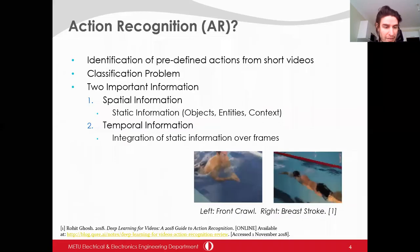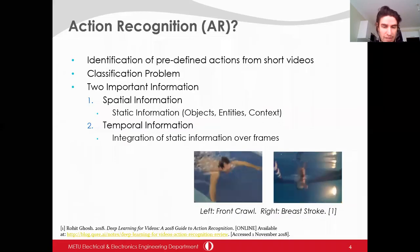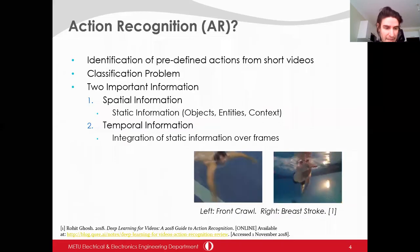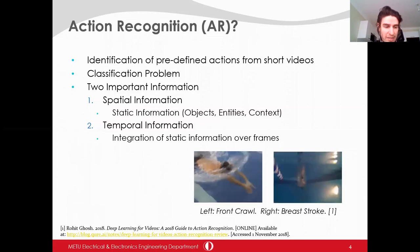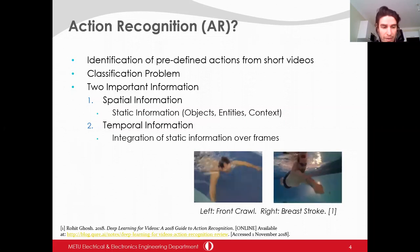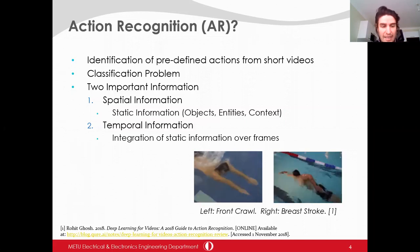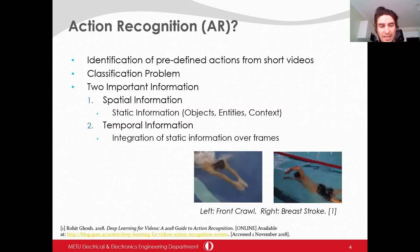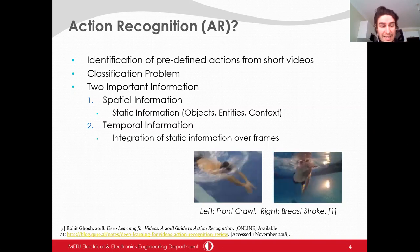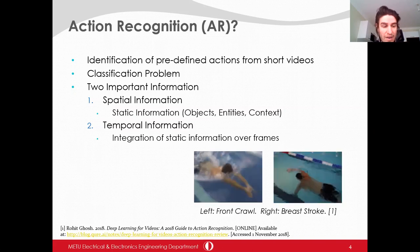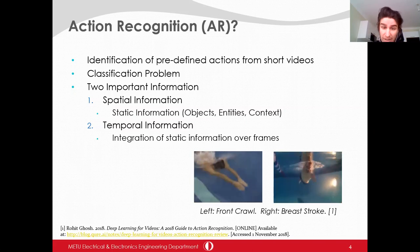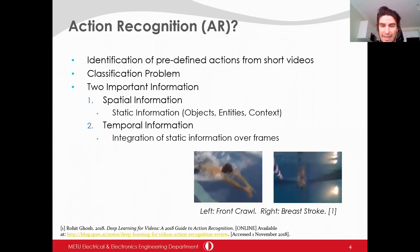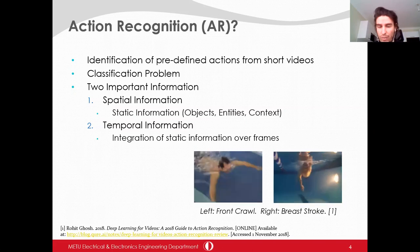In the figure, there are two types of swimming styles. The person, water, and the relationship between them are related to spatial information, and swimming action can be recognized using these alone. However, to make a discrimination between front crawl and breaststroke, there is also a need to utilize temporal information.